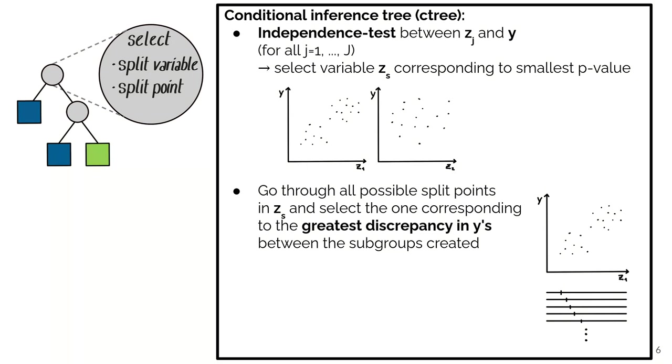So here we would select probably the first one, and we select that corresponding to the smallest p-value in the independence test.